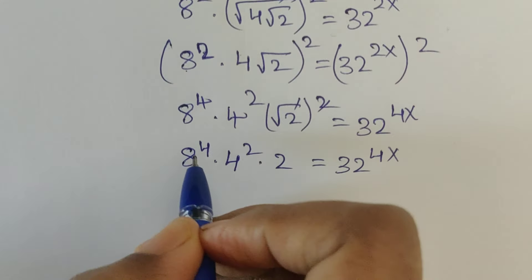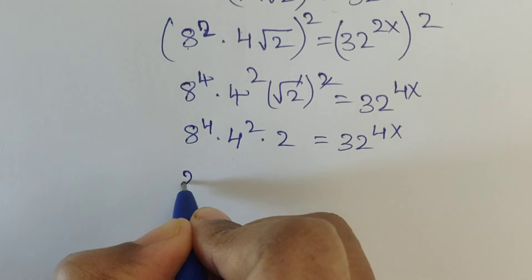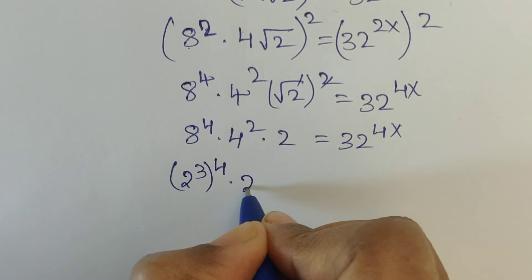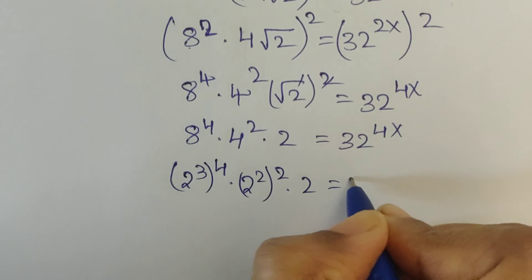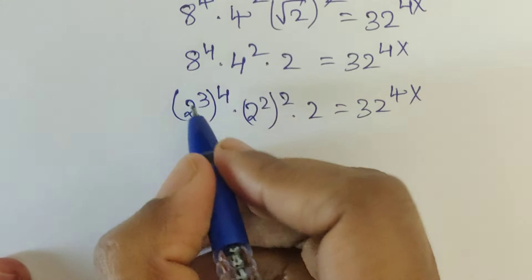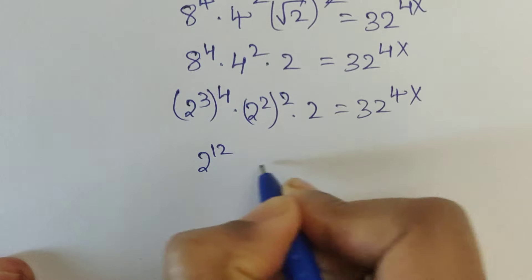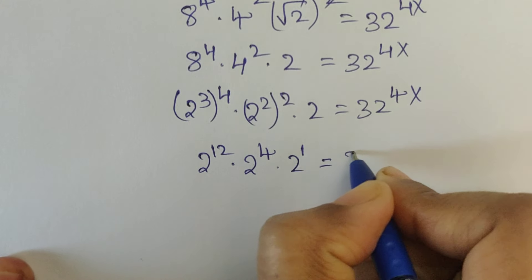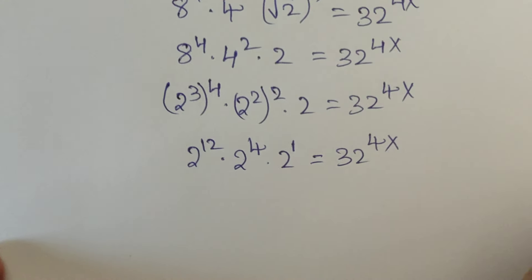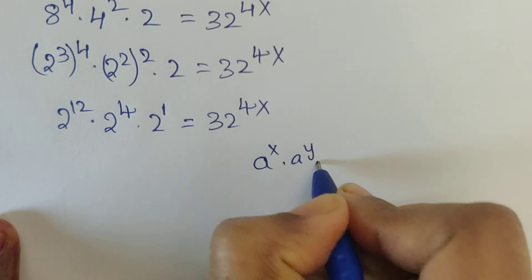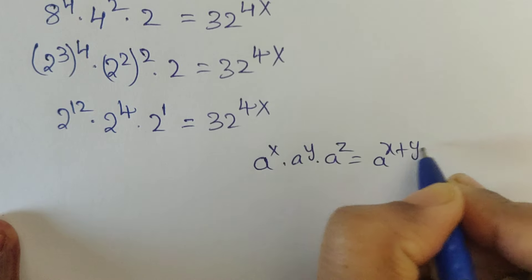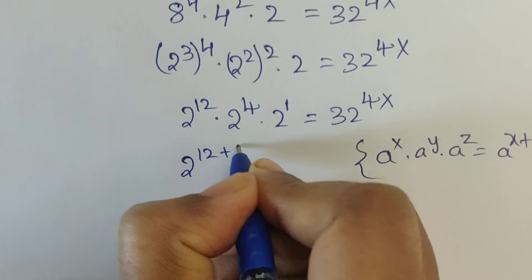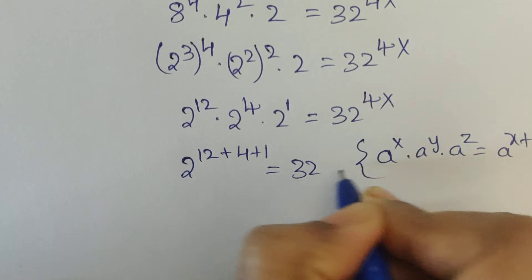Here we have 8, which can be written as 2 to the power of 3, whole to the power of 4. And 4 can be written as 2 squared, whole to the power of 2, times 2 equals 32 to the power of 4x. So 3 times 4 equals 12, giving 2 power 12. And 2 times 2 equals 4, so 2 power 4, times 2 to the power of 1. We apply the formula: a^x times a^y times a^z equals a to the power of x plus y plus z.